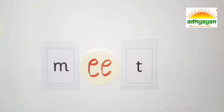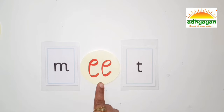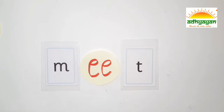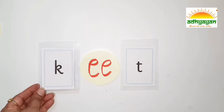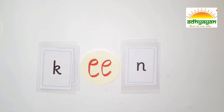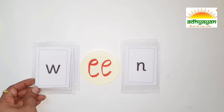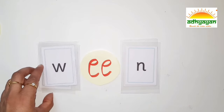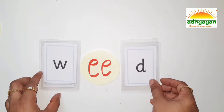Next long vowel is E, which says E. The words are: M-E-A-T — Meat. Next word is K-EE-N — Keen. Next word is W-E-A-T — Wheat.